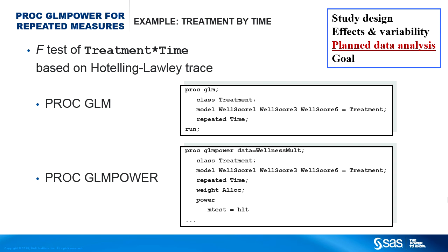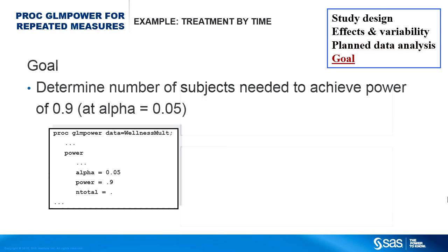In the POWER statement, you use the MTEST=HLT option to specify the Hotelling-Lawley trace statistic. Your goal is a power of at least 0.9 — at least a 90% chance of a significant result — using the traditional significance level of 0.05, allowing only a 5% chance of a false positive (a significant result when there is no actual treatment-by-time interaction). You assign a missing value to the NTOTAL option in the POWER statement to request a solution for the total sample size.